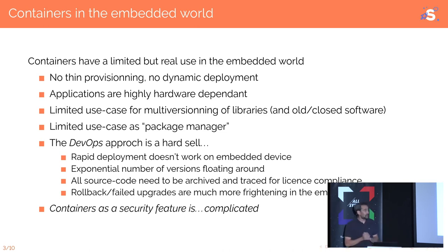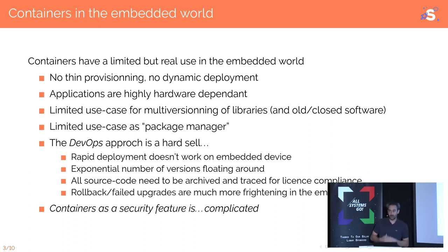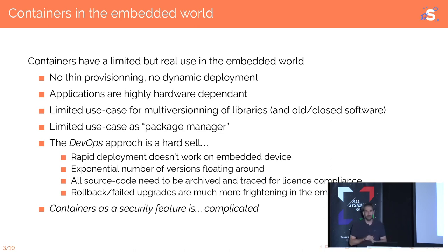We need to archive all source code for legal reasons. In the data center you're providing a web service and you don't need to redistribute your code. In the embedded world we are legally forced to, which means that whenever we do an upgrade it's one more version we need to archive and distribute. Rollbacks are really frightening — we do have robust rollback mechanisms, but we have no access to our devices once they are sold. We might have limited remote access, but if things go wrong, we're toast.